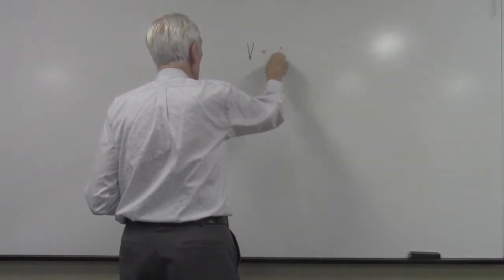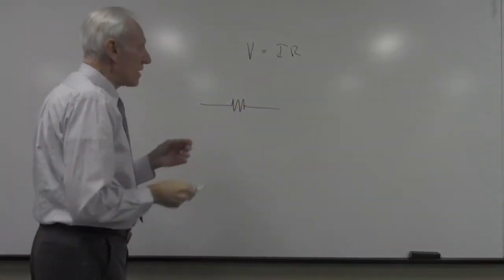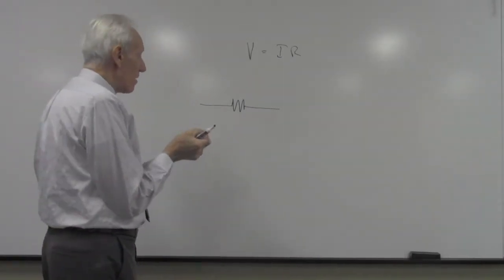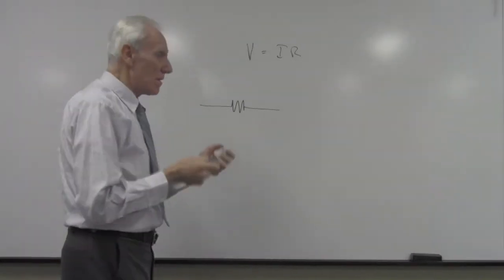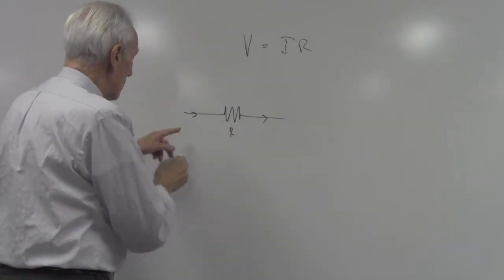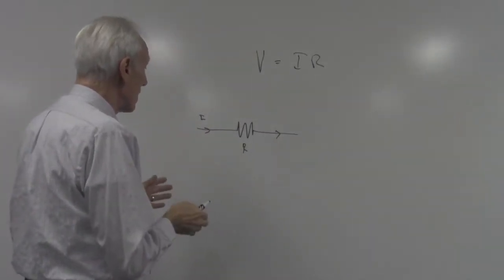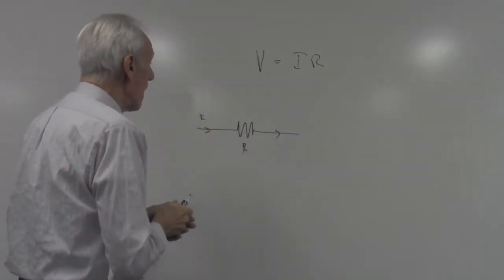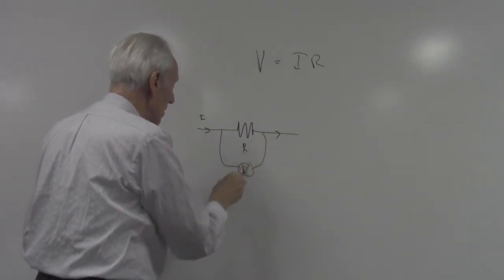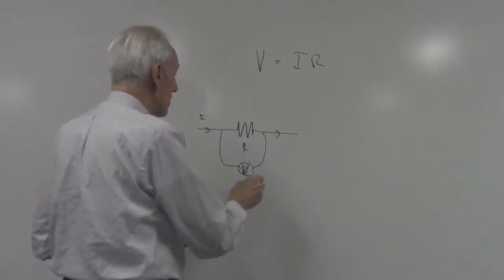Ohm's Law says this very simply. If you have a resistor — and we'll have a circuit composed of hookup wire, which has essentially no resistance, and what are called discrete circuit elements, a resistor that has virtually all the resistance. We're going to send some current through that resistor. Current is just the flow of charges. There's a very simple relationship between the current through a resistor, the resistance of the resistor, and the voltage drop across the resistor. If we put a voltmeter across this resistor and measure the voltage, it's given by the current through the resistor times the resistance value in Ohms.